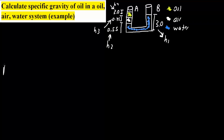So we have Pb, the pressure due to the atmosphere for B, plus density of water times G times H1. H1 is the height from here to here. We ignore the horizontal leg and just focus on the verticals of B and A. So this will equal our pipe A.